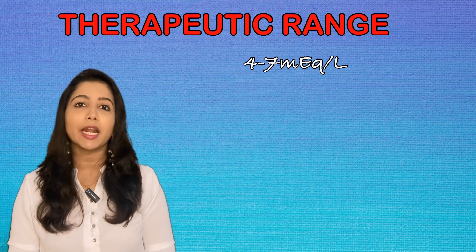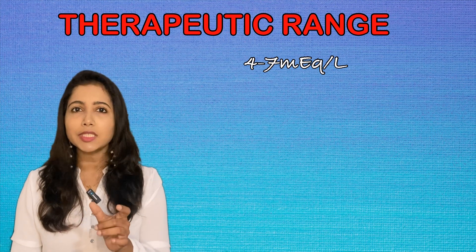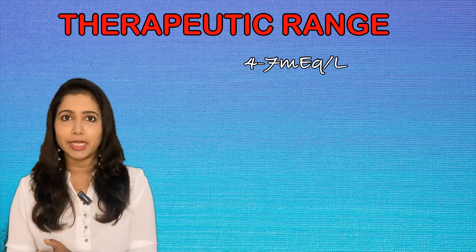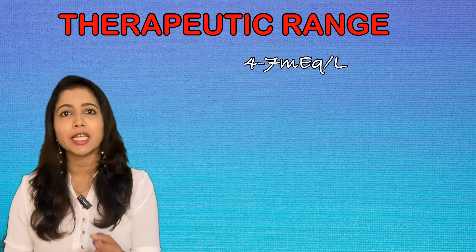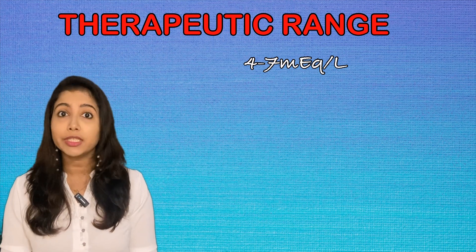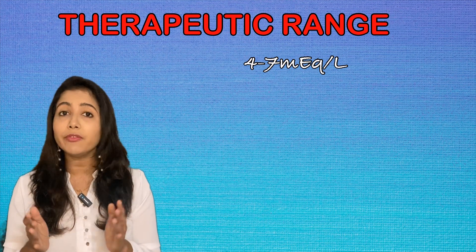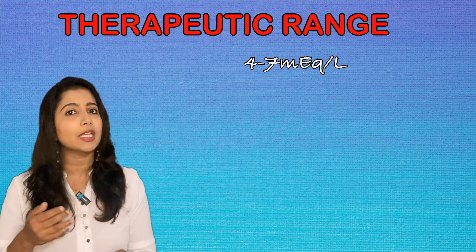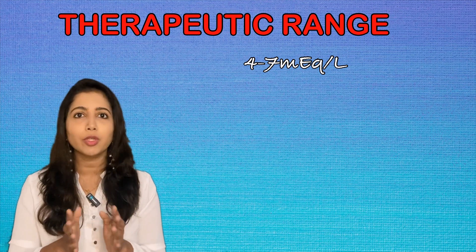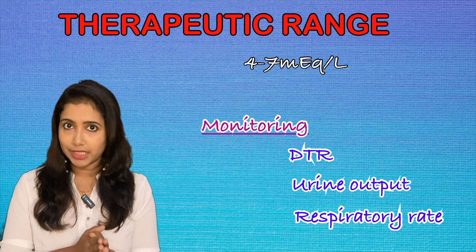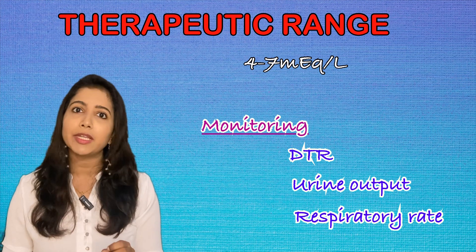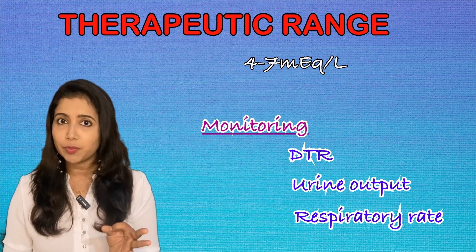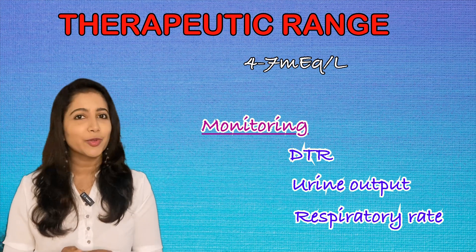Magnesium sulfate has a very narrow therapeutic range: 4 to 7 milliequivalents per liter. This implies a high chance for toxicity, so monitoring must be done very vigorously once we give magnesium sulfate. Monitoring includes checking deep tendon reflexes (the patellar reflex), checking urine output, and checking the respiratory rate. These are the three things we monitor.